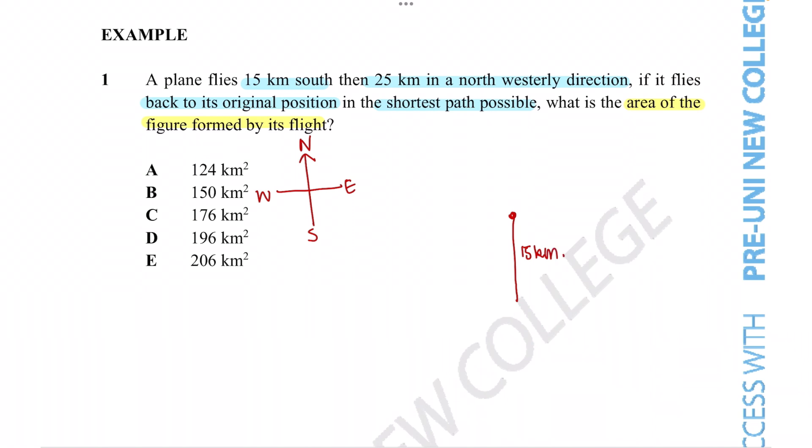So we start off the plane flying 15 kilometres south. Then it flies 25 kilometres in a northwesterly direction. Then it flies back to its original position in the shortest path possible, so that must be in this direction. The question wants us to figure out the area of this path. And we can see that this is in fact a triangle. So we have a right angled triangle at play here.